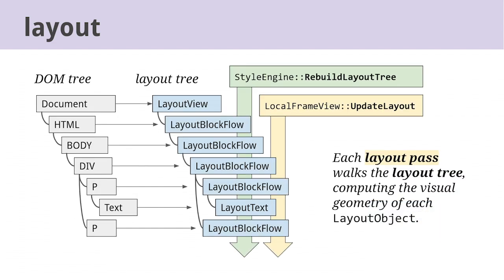Layout operates on a separate tree linked to the DOM — we call this the layout tree. The nodes in this tree implement the layout algorithms, so there are layout classes like LayoutBox, LayoutInline, LayoutTable, and so on, depending on what layout algorithm the element needs to use. They all inherit from the common base class LayoutObject. Before we can do layout, we have to build the tree, which happens at the end of the style resolution stage. The layout stage then traverses the layout tree, figuring out all the geometry data, line breaks, scroll bars, and so on.